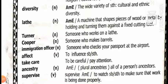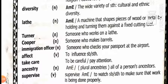A lathe is a machine that shapes pieces of wood or metal by holding and turning them against a fixed cutting tool. A turner is someone who works on a lathe. A cooper is someone who makes barrels. An immigration officer is someone who checks your passport at the airport.